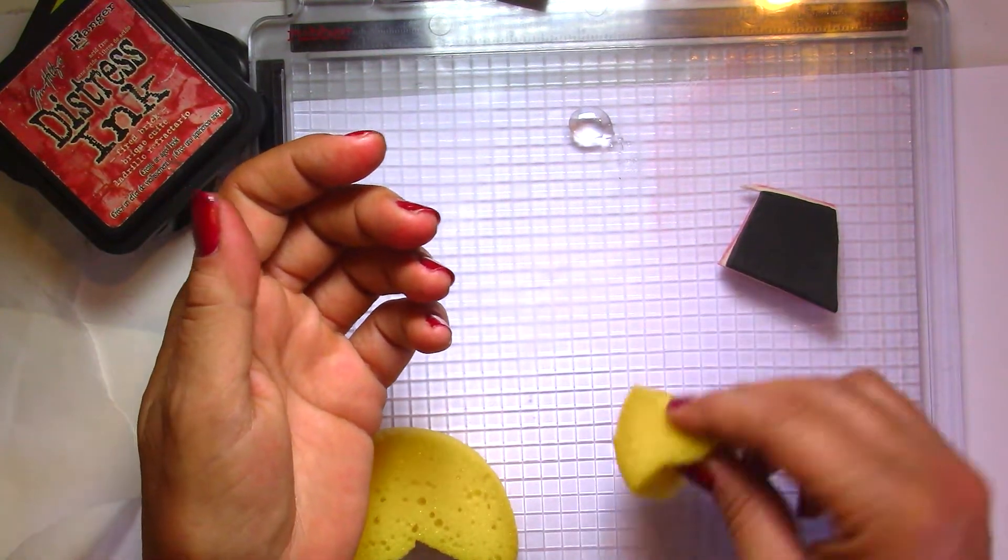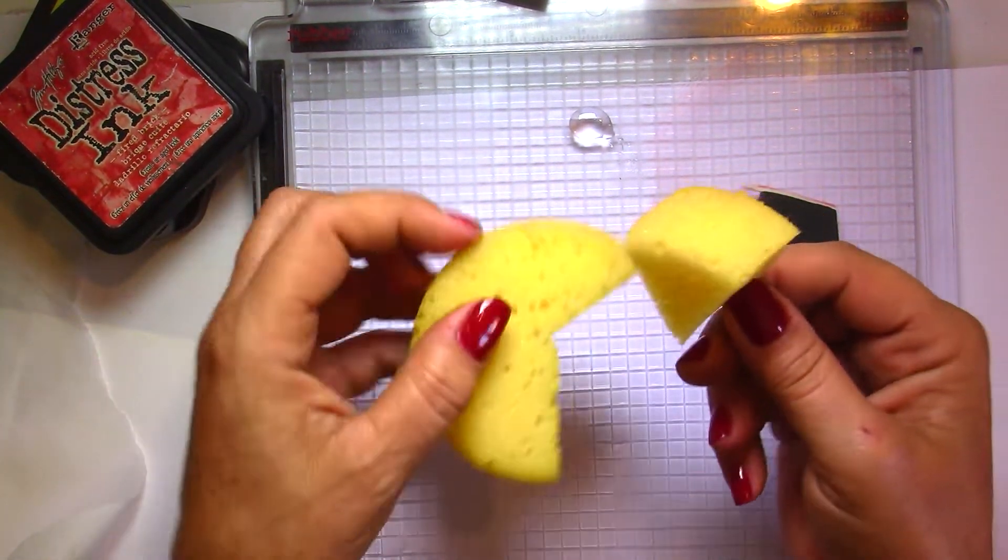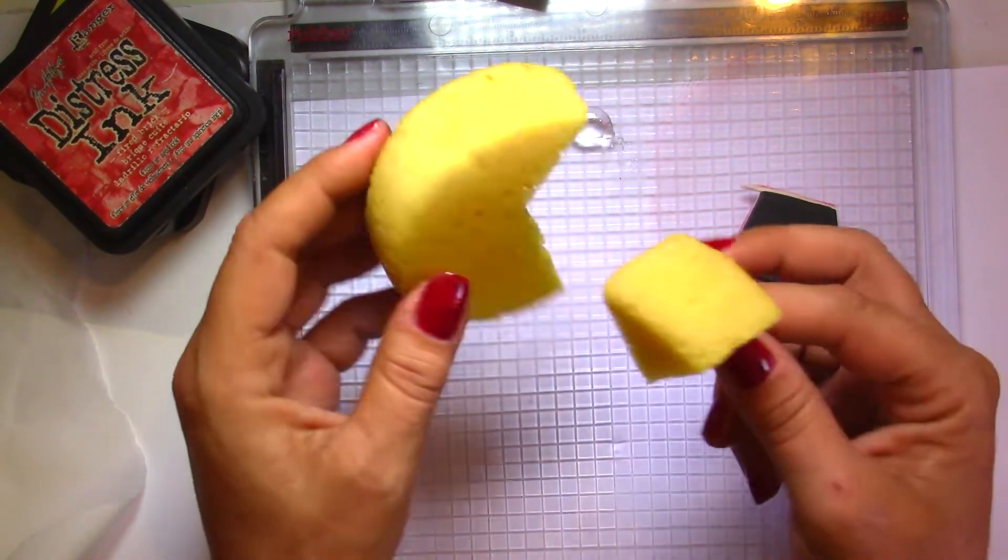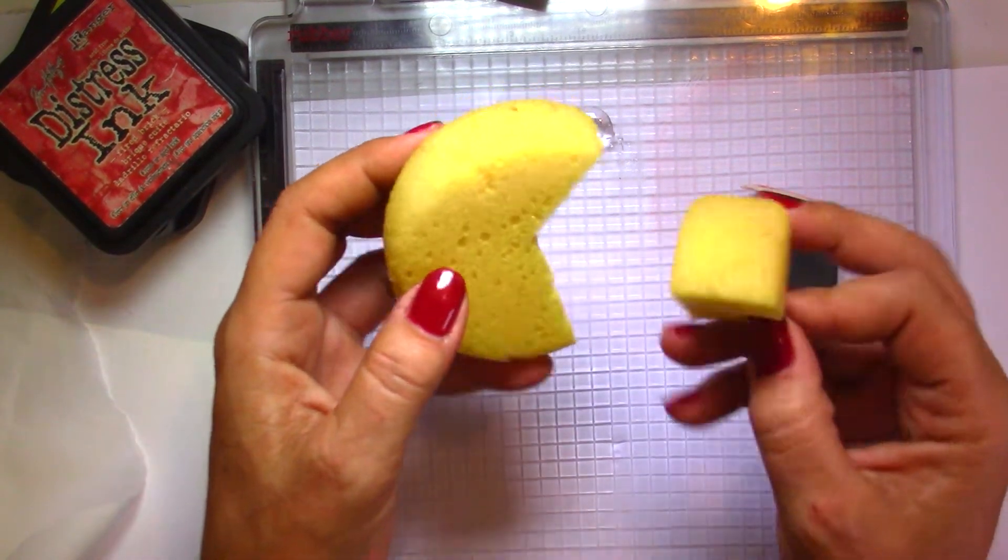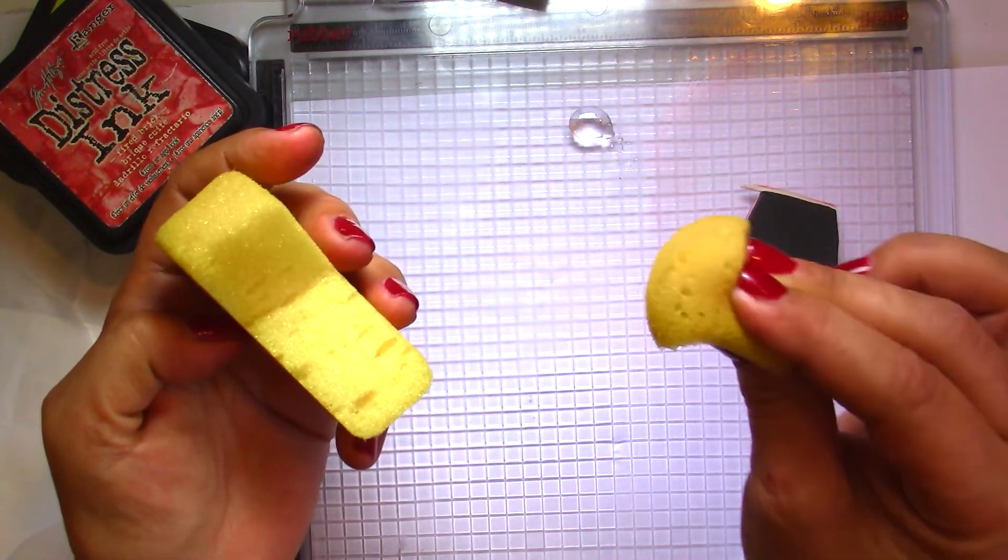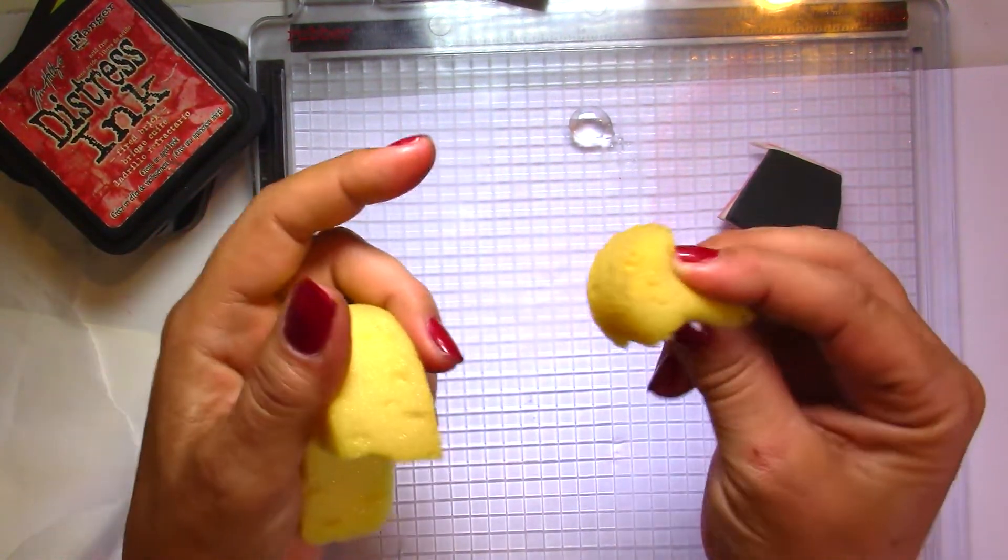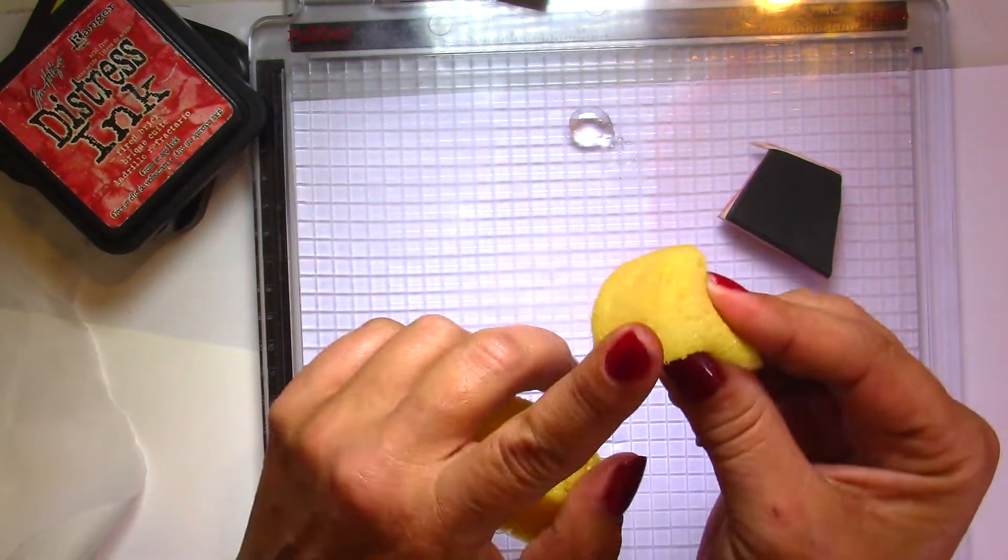It also works perfectly with these—these are just sponges that I have found in my local improvement store. You can find these in craft stores too. I think Stampin' Up makes some. It's absolutely great for this technique, better than makeup sponges I think, because it glides much easier.